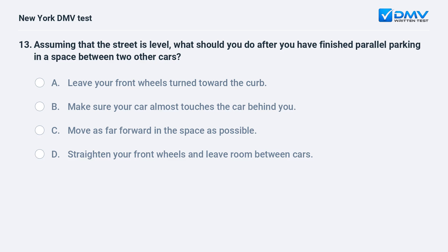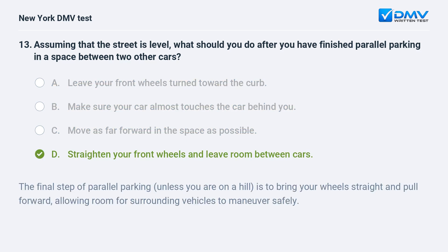Assuming the street is level, what should you do after you have finished parallel parking in a space between two other cars? A. Leave your front wheels turned toward the curb. B. Make sure your car almost touches the car behind you. C. Move as far forward in the space as possible. D. Straighten your front wheels and leave room between cars. The answer is D. The final step of parallel parking, unless you are on a hill, is to bring your wheels straight and pull forward, allowing room for surrounding vehicles to maneuver safely.